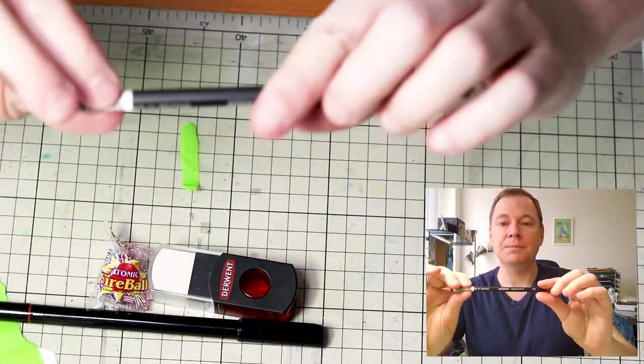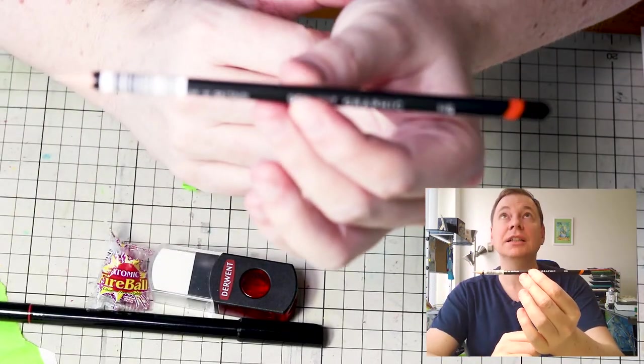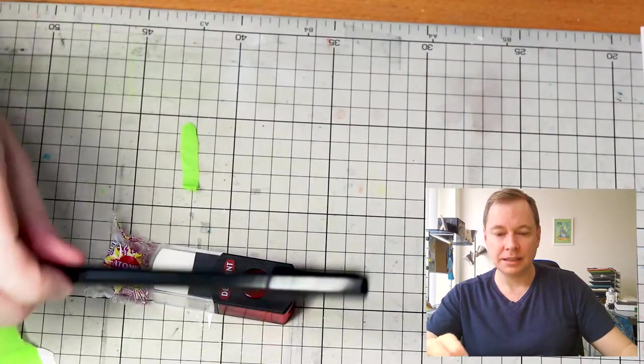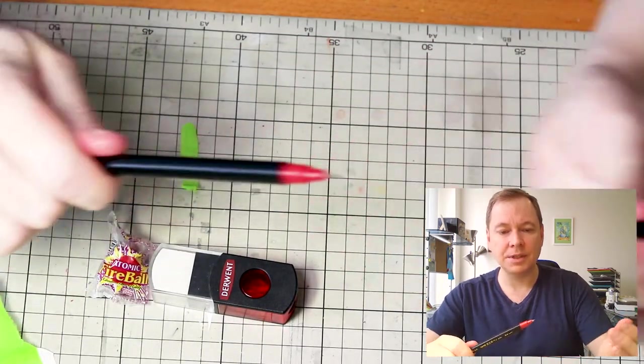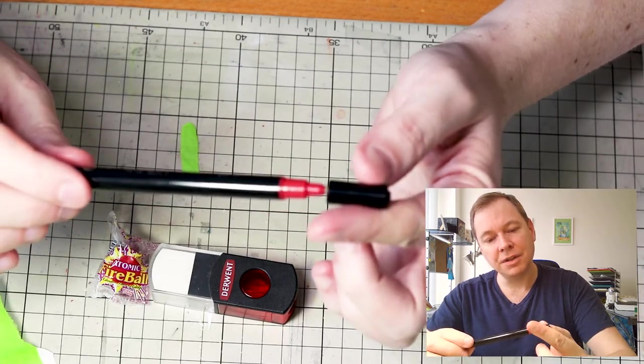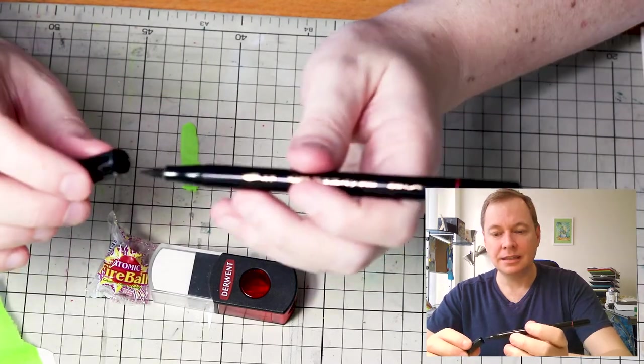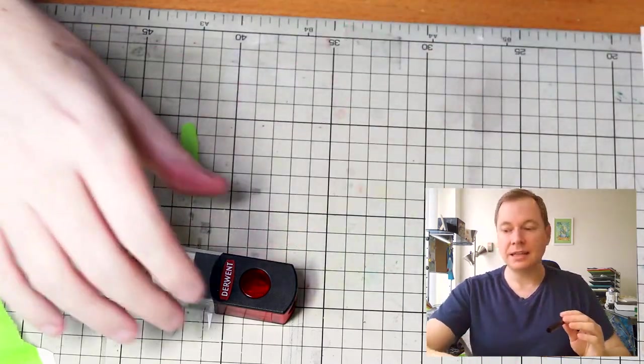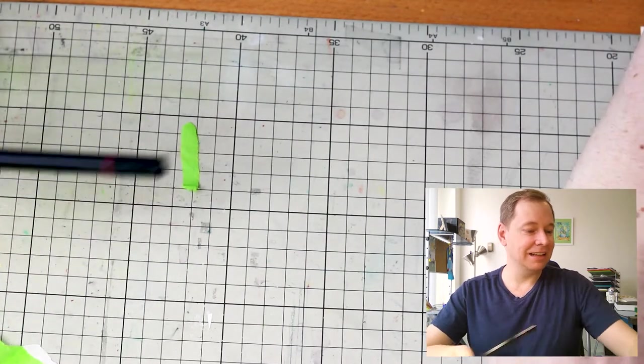A Derwent Graphic HB. Always can use an HB pencil for sketching. That's great. And then this guy is double tipped. It's a Japanese Pentel brush pen. Brush end and thin end. Let's try these guys out.